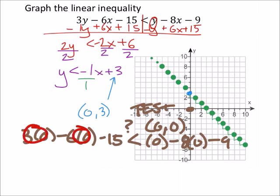And these all just become 0. So that's pretty convenient. What I end up with is a negative 15 is less than negative 9. Is this true or false? This is true. Very good.